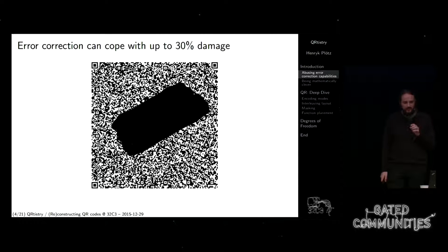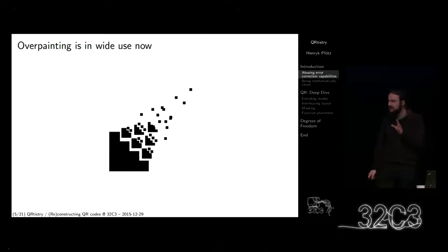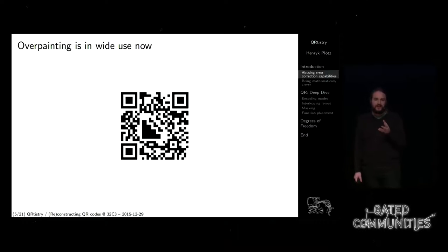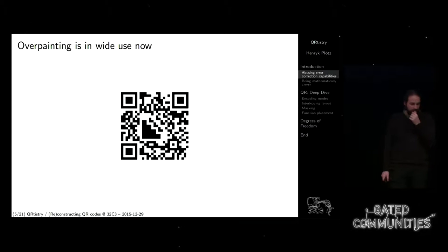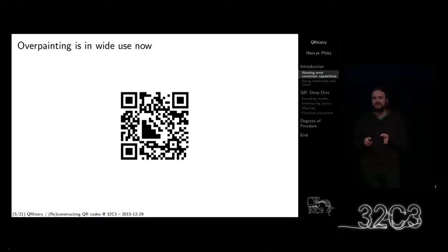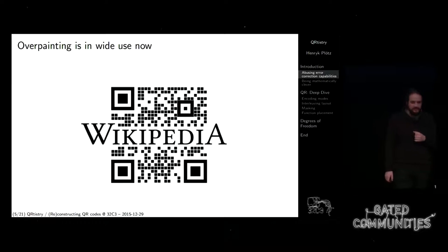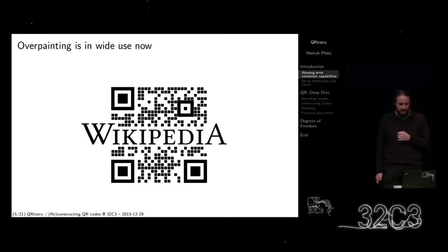One of the most recent examples I particularly liked was a project called Sandstorm. This is their logo — it already looks like a code. And this is their QR code. It does look like the logo is embedded there, but it's not — it's just overpainted. With my tools, you could see the original code that was overpainted on. Most of these are for advertisement, but I might advertise for this project because it's cool. They also have a code that is using overpainting.